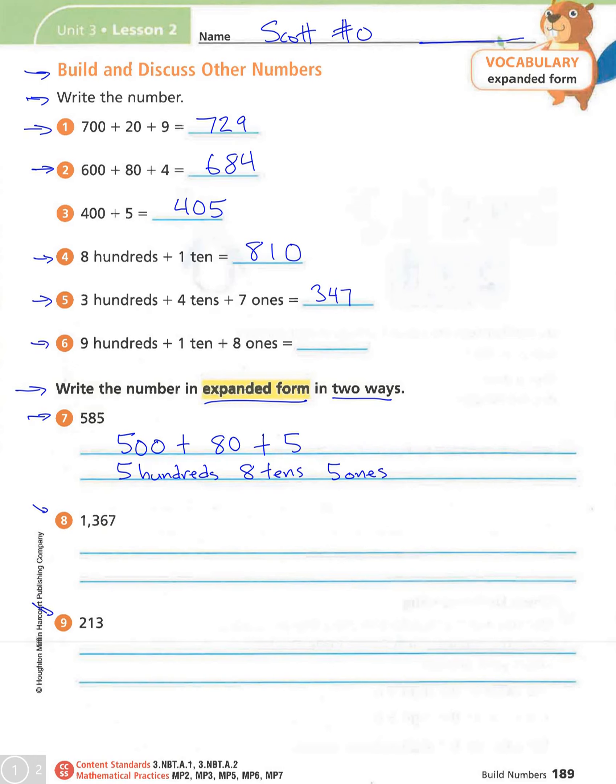And then on number 6, 9 hundreds, 1 ten, and 8 ones. So 918. Alright.